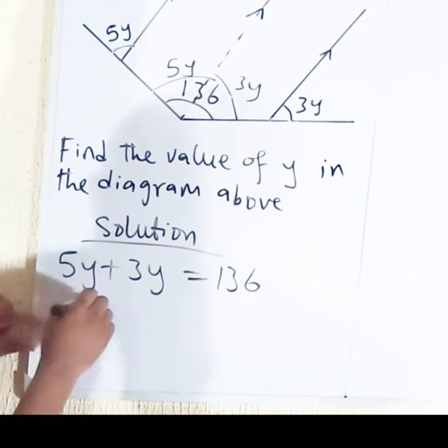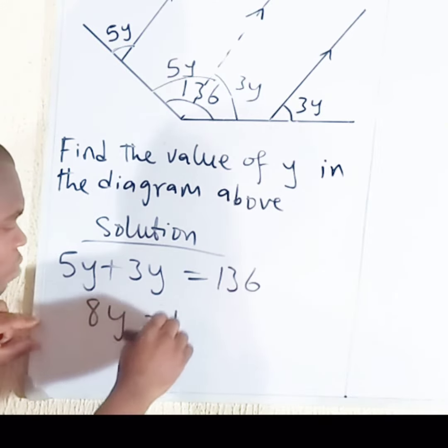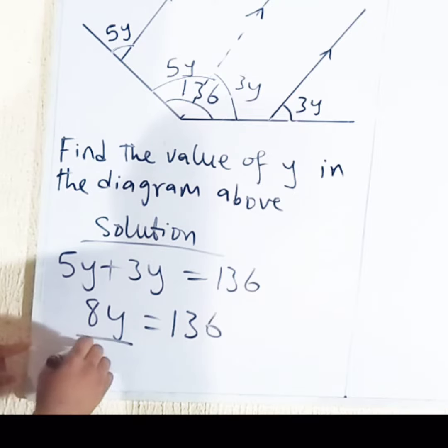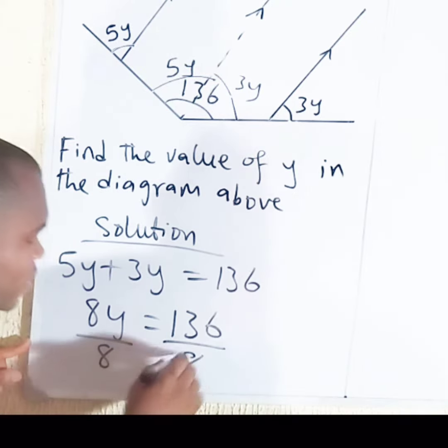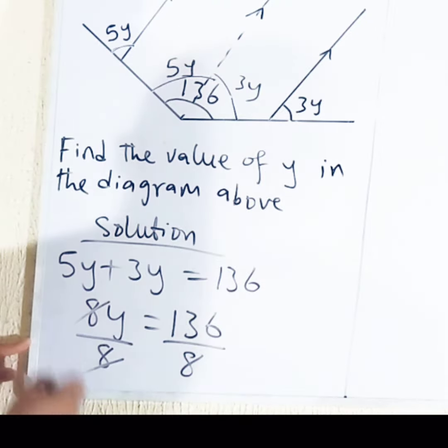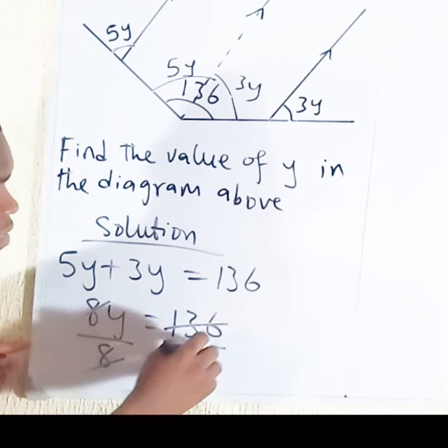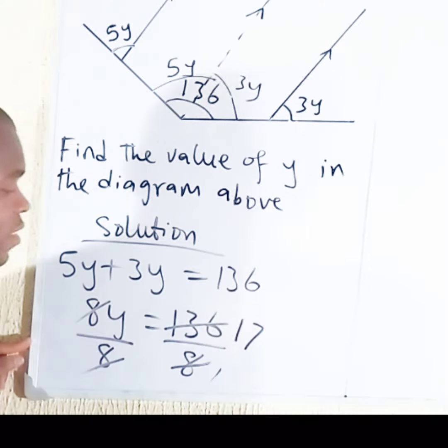When you add, you have 8y is equal to 136 degrees. We divide both sides by 8. 8 divides this 8, leaving only y. Here it divides 136, you have 17.